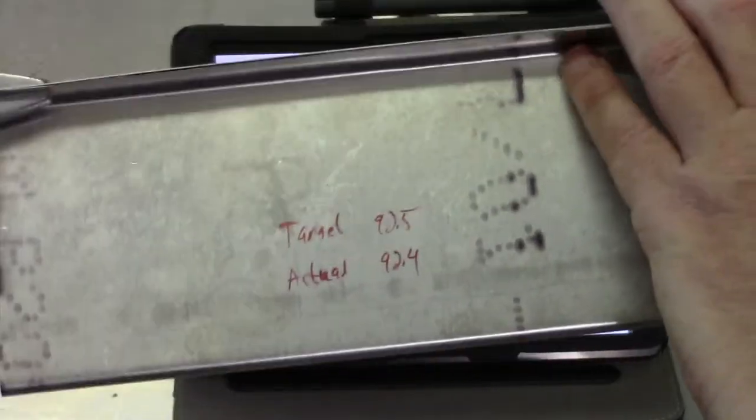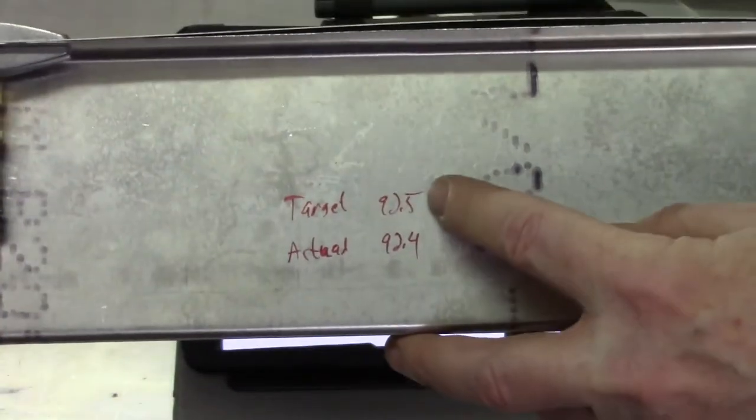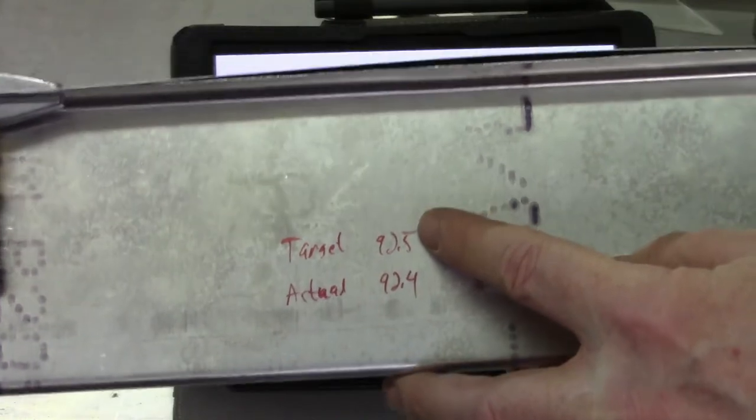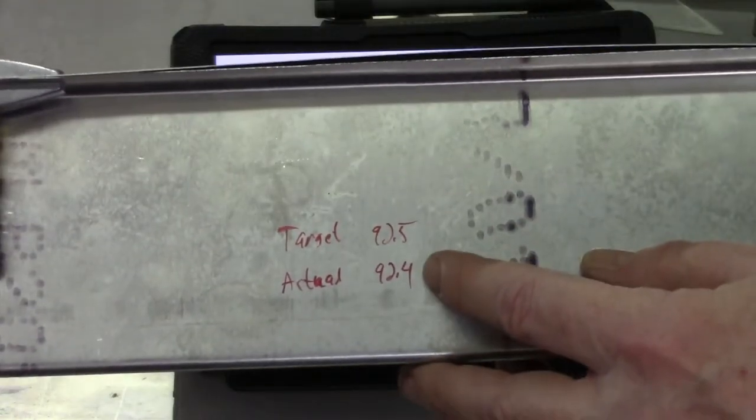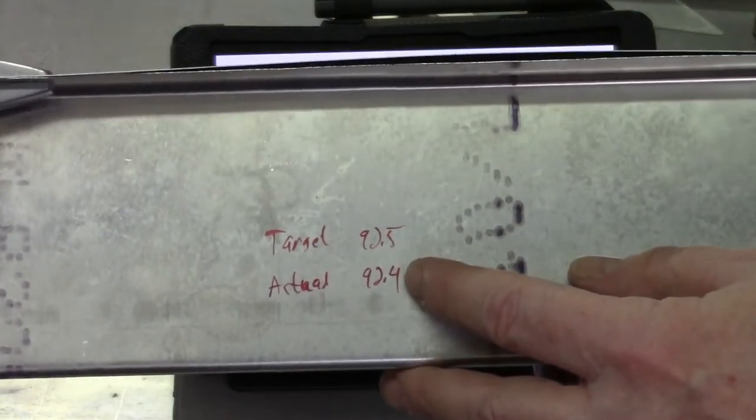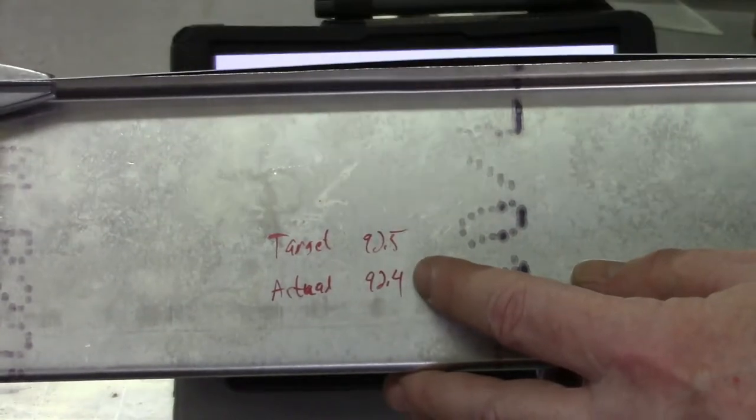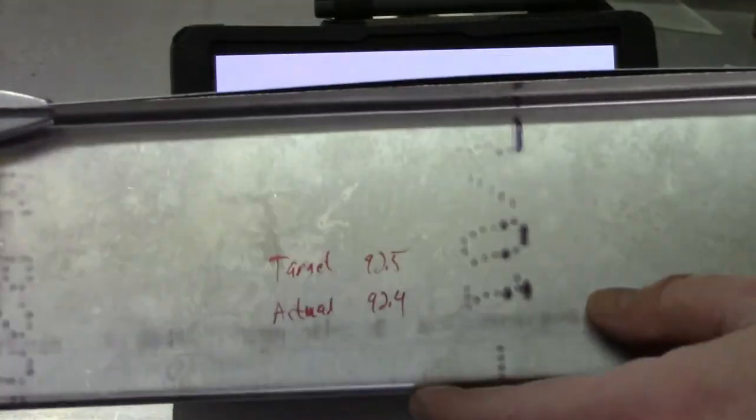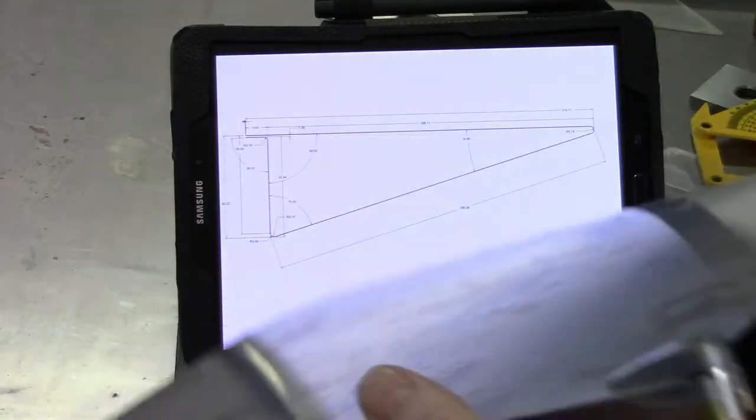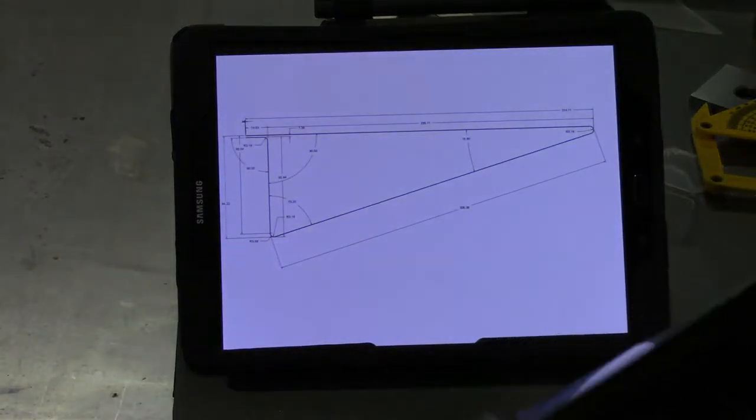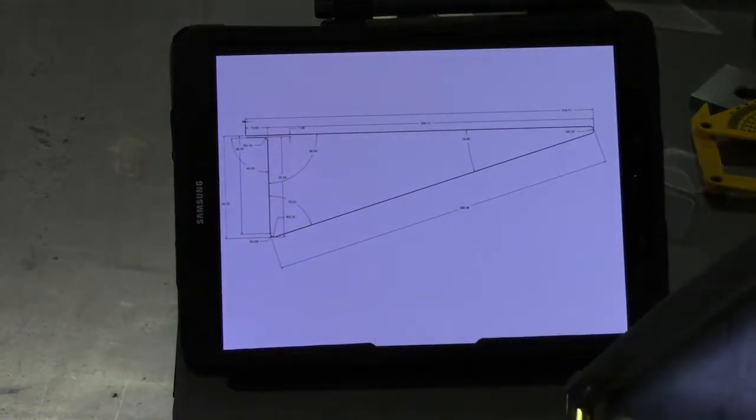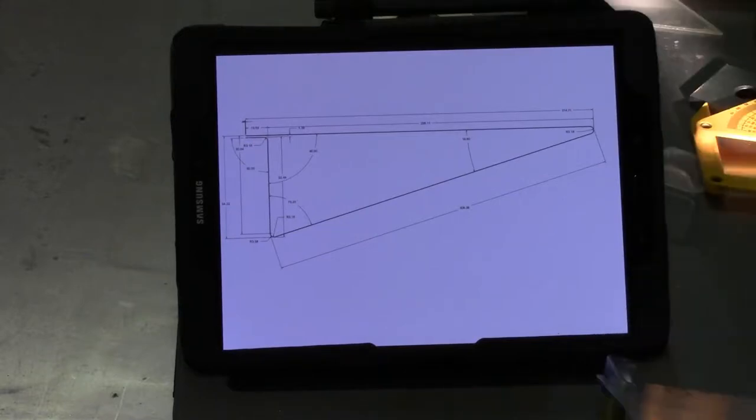And then for the final side, the target was 92.5, roughly going according to the drawings. And the length was short enough, I was able to measure it with my calipers. And it came up with basically 92.5. So everything's looking pretty good at this point. And we'll go ahead and move forward with making the ribs.